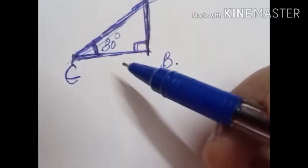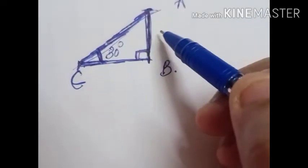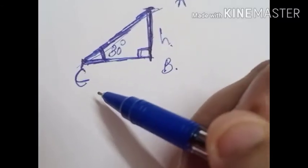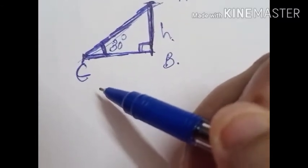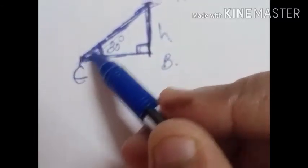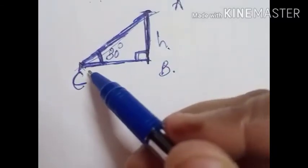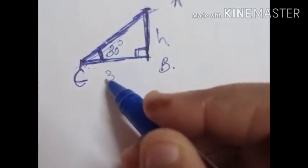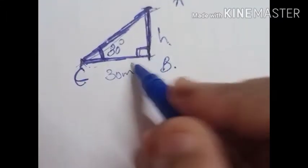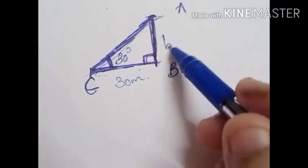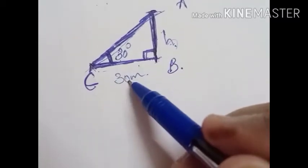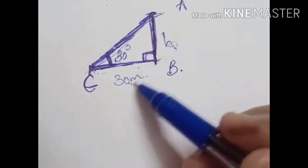According to the question we have to find the height of the tower. The distance between the foot of the tower and the point from where the angle of elevation is taken is given as 30 meter. So here we have to find H. About this 30 degree angle, this is the opposite side and this is the adjacent side — so we should use the opposite and adjacent relation.